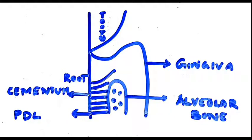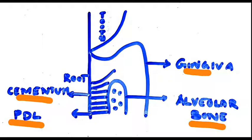Basically there are four structures. First is your gingiva, which surrounds the tooth. Then comes your alveolar bone, which supports the tooth. Then you have your cementum, which covers the root surface. And finally, we have the periodontal ligament, which is an attachment apparatus.